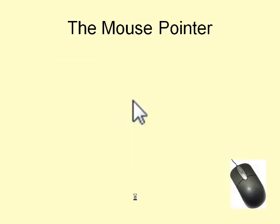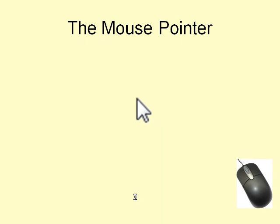In most modern computer systems a mouse pointer appears on the screen. Moving the mouse moves the mouse pointer across the screen.